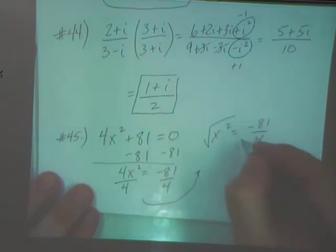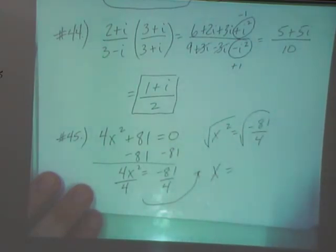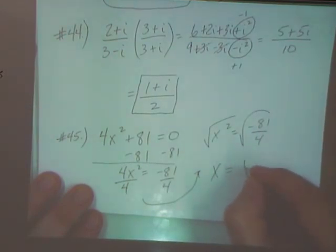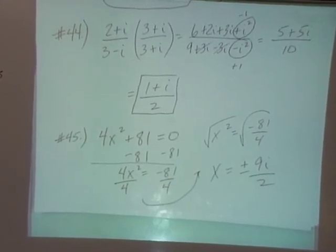And then square root both sides. So x equals plus or minus nine I over two. Remember when you square root a fraction, you take square root of the numerator and you take square root of the denominator. Any questions?